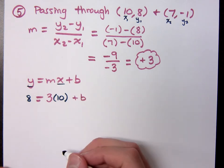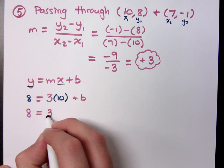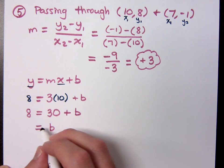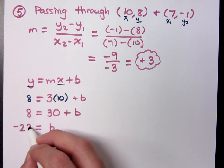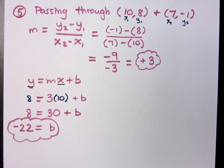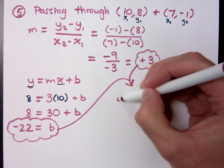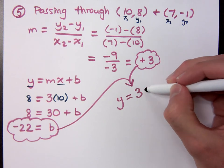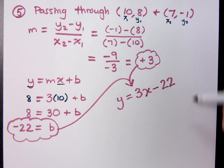Take this equation and solve it for me. So what do we have? So 8 equals 30 plus b, which means b equals how much? Careful. Negative 22. b equals negative 22, so there's my b. Here's my slope. What's my equation? y equals what? y equals 3x minus 22.